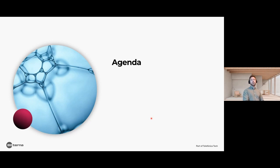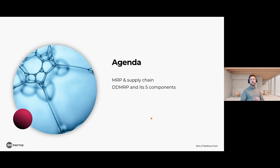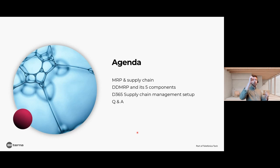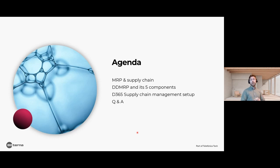MRP and DD MRP have a lot in common, so we will start by looking at how MRP works today, then dissect the DD MRP method and its five components — what it is, how it works, and how to apply it in D365. If there is time left, we're happy to answer questions. Feel free to post them in the Q&A section and we will try to gather them all at the end. If there are many questions, we'll publish answers in writing in the email sent out after the webinar.